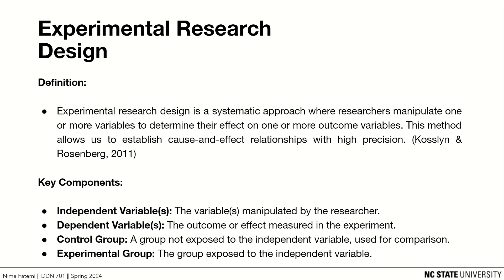Some key components of experimental research are: the independent variable — the variable that is manipulated by the researcher; the dependent variable — the outcome or effect measured in the experiment, which is dependent on the independent variable; the control group — a group not exposed to the independent variable, used for comparison; and the experimental group — the group exposed to the independent variable.